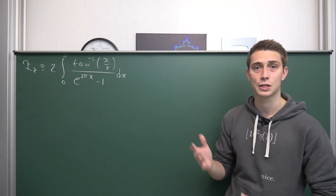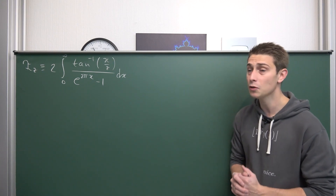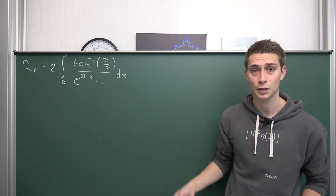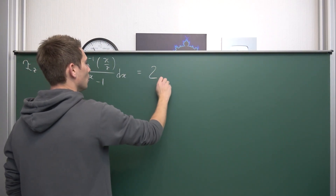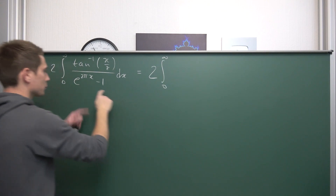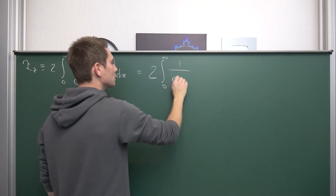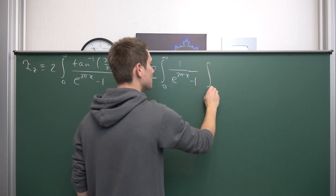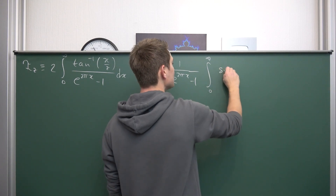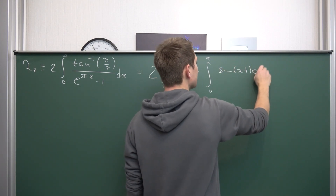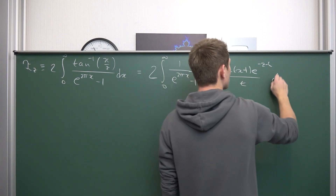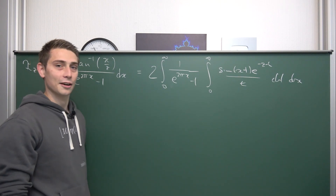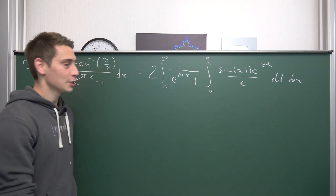Notice that the 1 over (e to the something) part looks kind of like an integral transform — I think this is where the idea for deriving this formula originally stemmed from. We're going to make use of a result derived previously: we can represent the inverse tangent as an improper integral. So we get 2 times the integral from 0 to infinity of 1 over (e to the 2πx minus 1), and the integral representation for arctan is the integral from 0 to infinity of sin(xt) e^(−zt) / t dt dx. Now we have a double integral — it doesn't look good, and it's going to get worse.